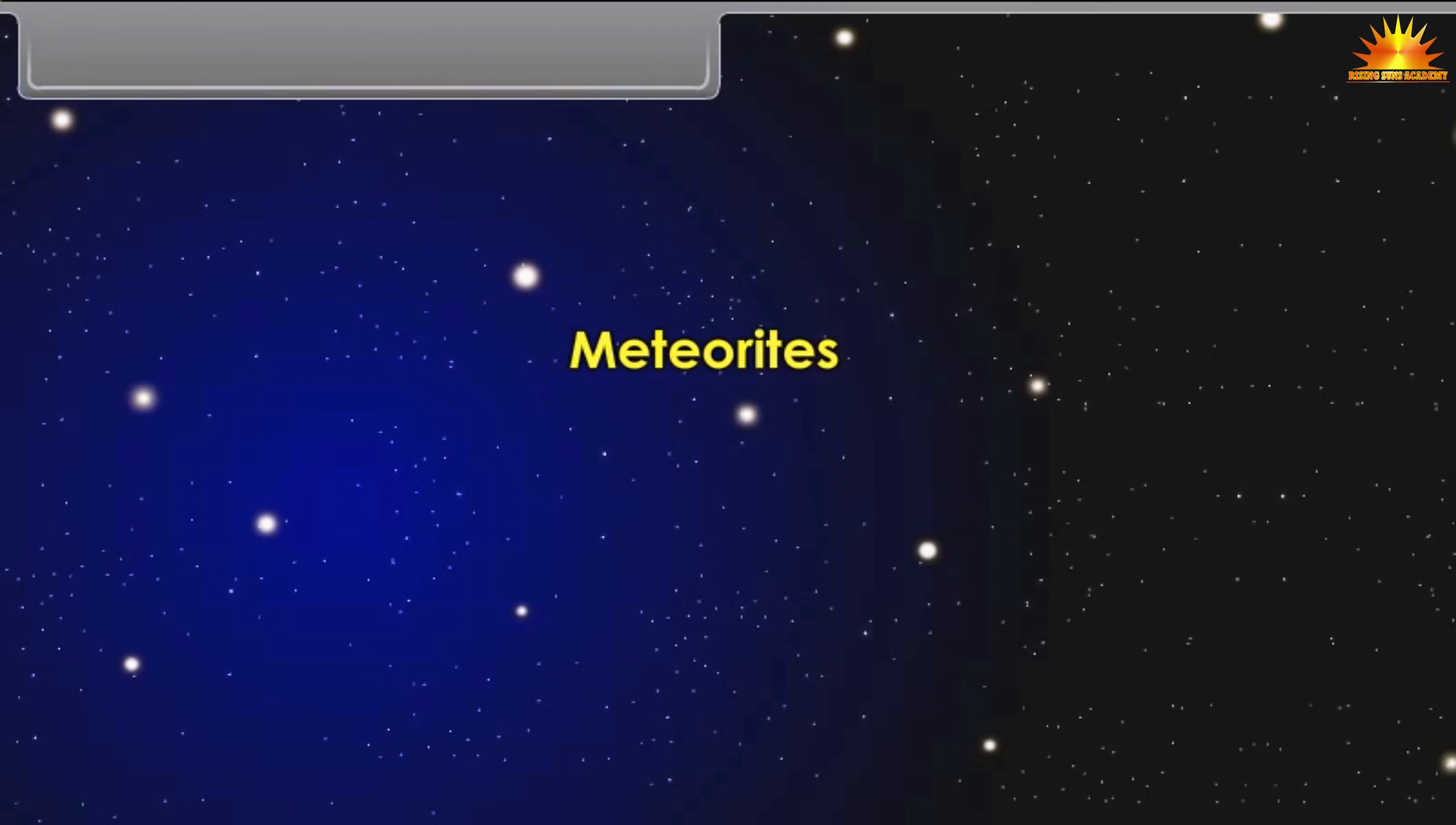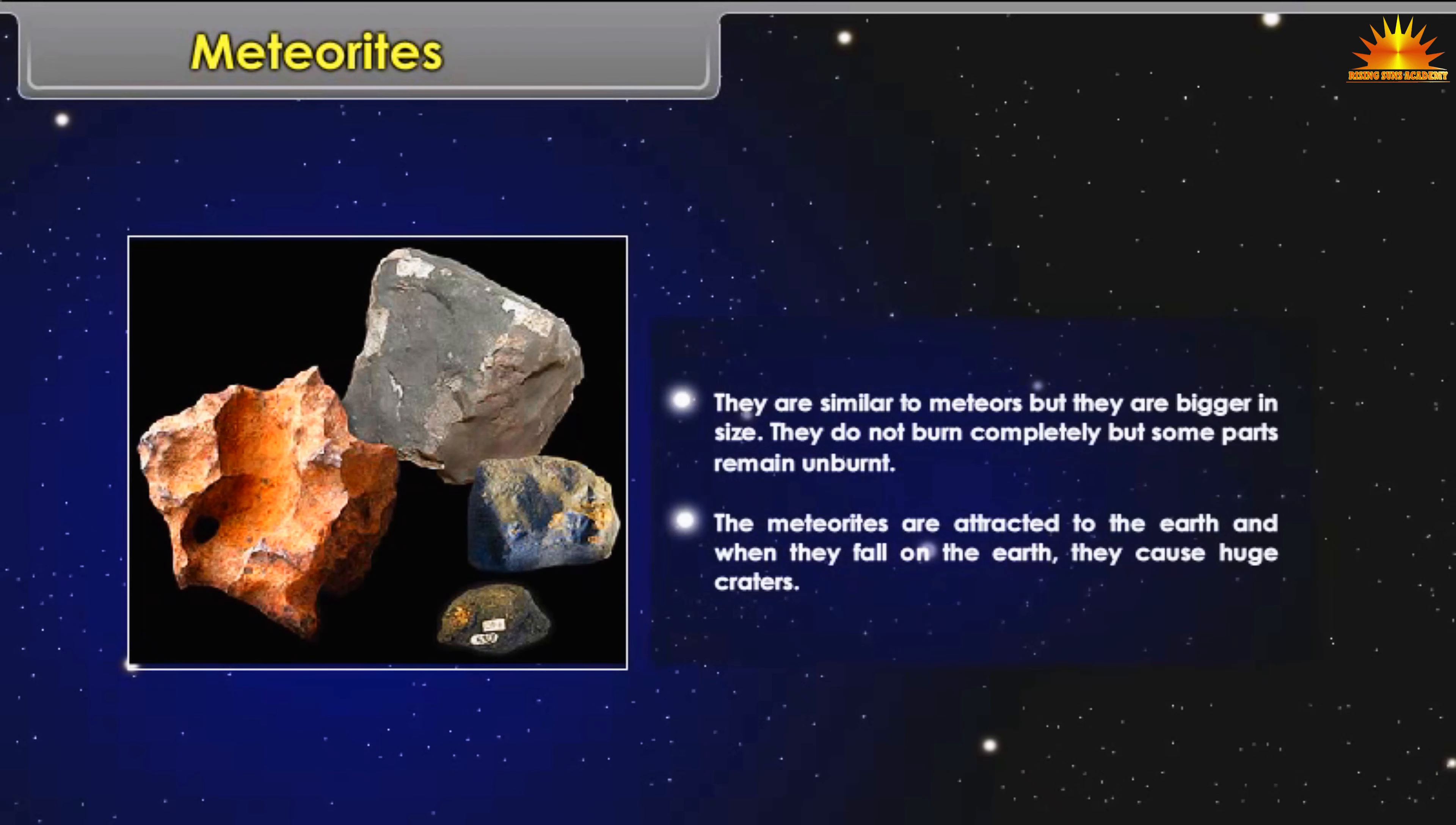Meteorites: They are similar to meteors, but they are bigger in size. They do not burn completely, but some parts remain unburnt. The meteorites are attracted to the Earth, and when they fall on the Earth, they cause huge craters.